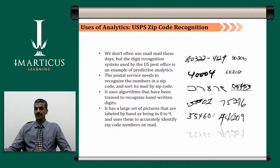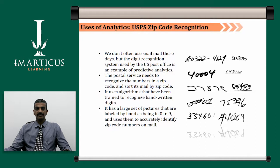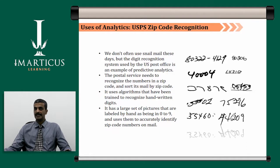Analytics is also used in the US to identify zip codes — this is zip code recognition. The digit recognition system used by the US post office is an example of predictive analytics. The postal service needs to recognize the numbers in a zip code and sort mail by zip code. It uses algorithms trained to recognize handwritten digits, with large sets of pictures labeled by hand as digits 0 to 9, to accurately identify zip code numbers on mail no matter how those digits are written.